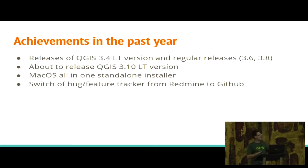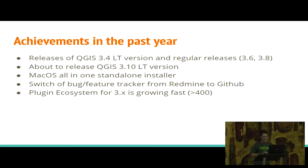Another major infrastructure change was switching from Redmine to GitHub as our issue tracker. Developers like it because it's better integrated with the code, and users like it because they can more easily copy-paste images and it has a more modern interface. Also, the plugin ecosystem is growing faster. We had strong API breaks between versions 2 and 3, meaning plugins couldn't load in QGIS 3.x, but now we have more than 400 plugins back again.